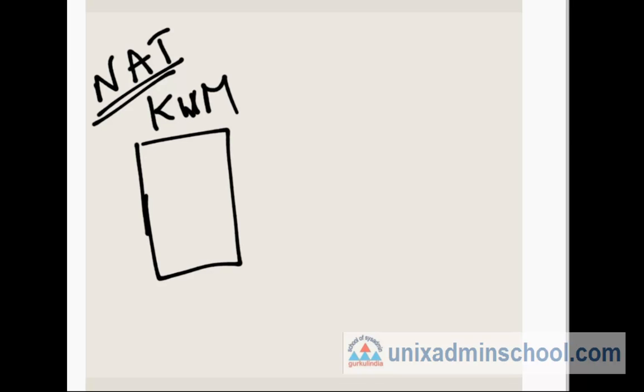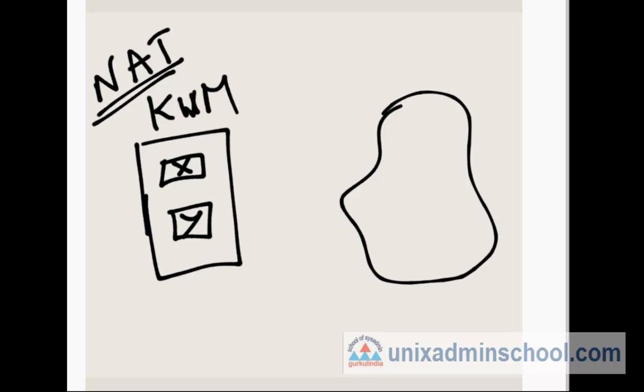First, let's discuss about NAT. NAT is nothing but hiding the source address to the external world. For example, this is my KVM host and this is external world. I have one VM here and another VM here. I have IP X here and IP Y here.